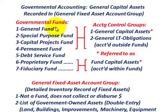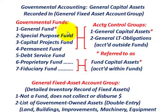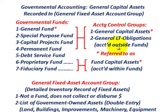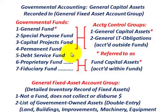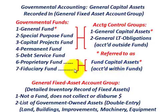We have two different accounting control groups to look at. For governmental funds — the general fund, special purpose fund, and capital projects fund — when we make investments in capital assets, they're going to be recorded in the accounting control group for general capital assets, and those are accounted for outside of the funds. For proprietary funds and fiduciary funds, they're referred to as fund capital assets and are accounted for within the funds.